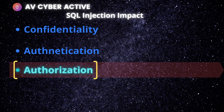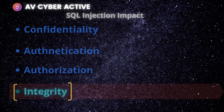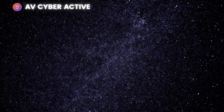For authorization, if authorization information is held in a database, it may be possible to change that information through a successful SQL injection exploit. For integrity — perhaps most important — just as it may be possible to read sensitive information, it might also be possible to make changes or even delete that information with a SQL injection attack.